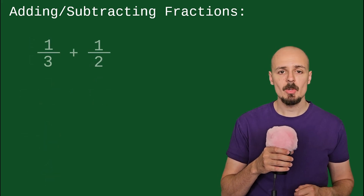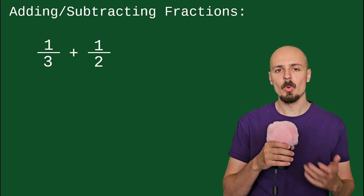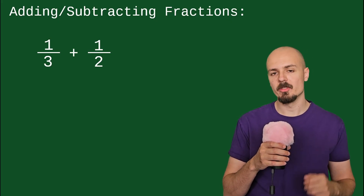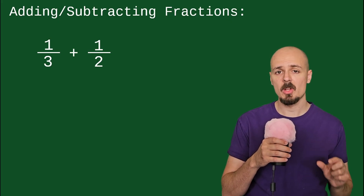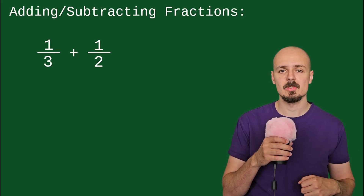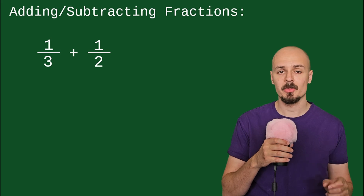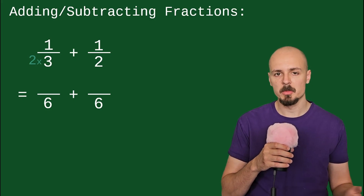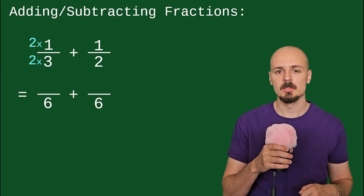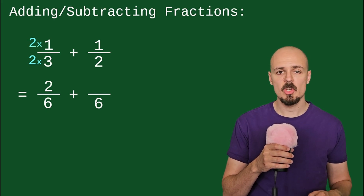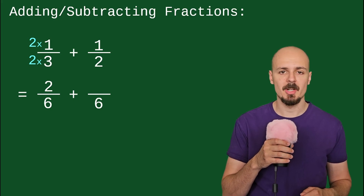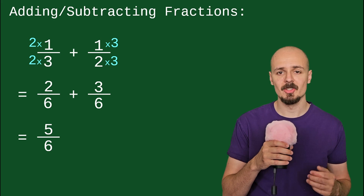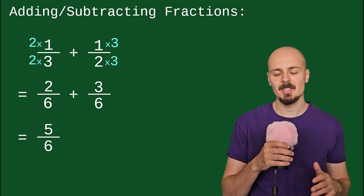Let's do another example: 1 third plus 1 half. There's no whole number I could multiply 3 by to get 2, and no whole number to multiply 2 by to get 3, so unlike the last question I need to change both denominators. I'll pick the common denominator by finding the smallest number that both 3 and 2 fit into — that's 6. To change 3 to 6, multiply by 2, and do the same to the numerator, giving a numerator of 2. Then change the other denominator to 6 by multiplying by 3, and do the same to the numerator, ending up with 3 over 6. Now we can add to get 5 over 6. We check if this can be reduced — it cannot, so we're all done.